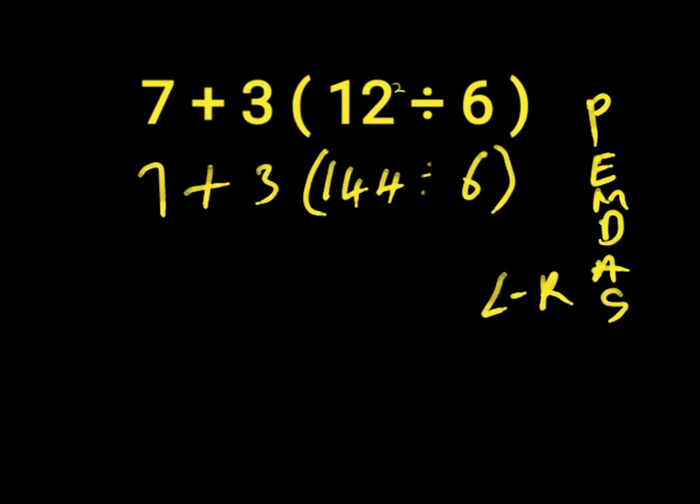Then we solve our parentheses, which is 144 divided by 6. 144 divided by 6 will give us 24. Then we have 7 plus 3 times 24.